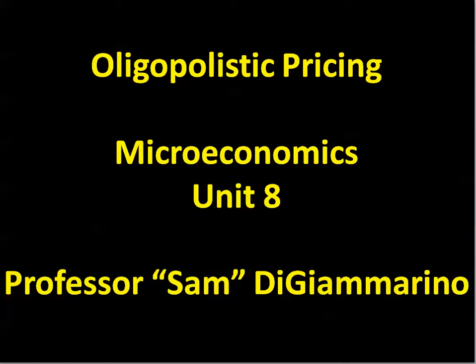Hello ladies and gentlemen. Let's talk now about oligopolistic pricing for our Unit 8 Microeconomics class. You might remember that an oligopoly is two or at most very few producers producing the exact same thing. We're going to explore that concept and how it affects pricing decisions.